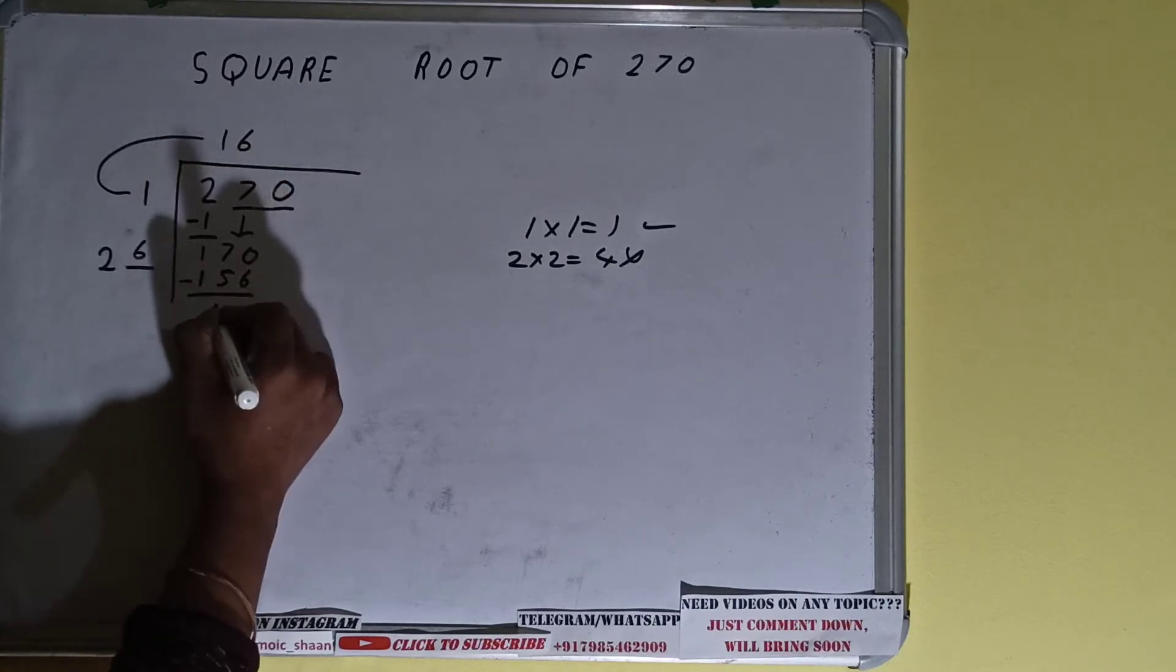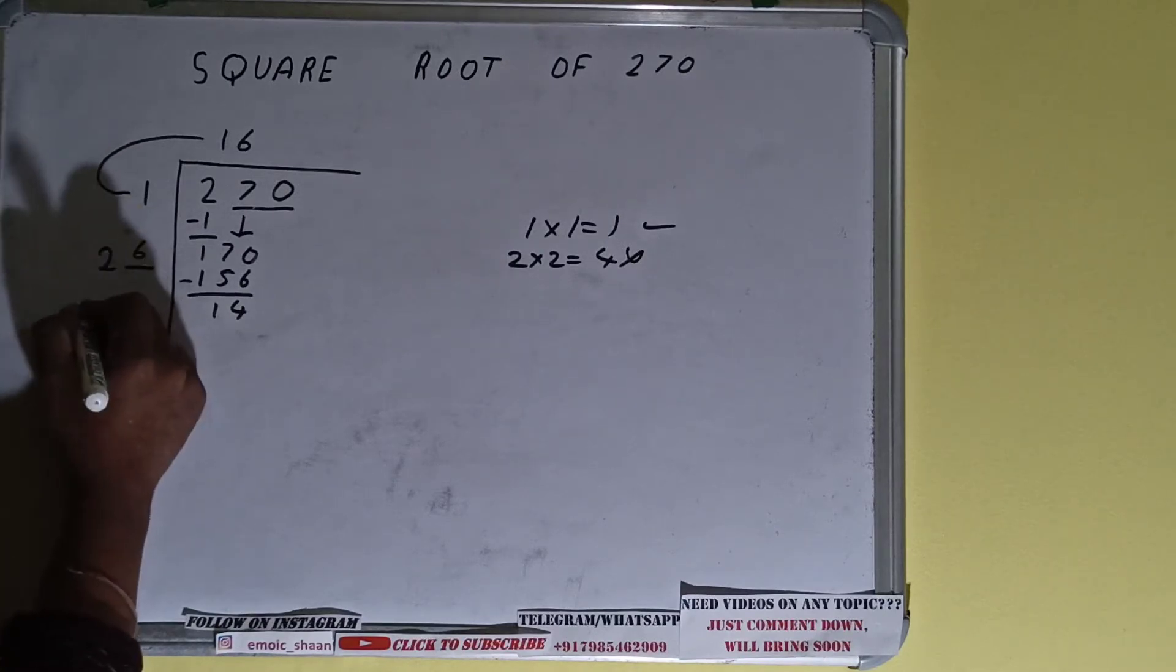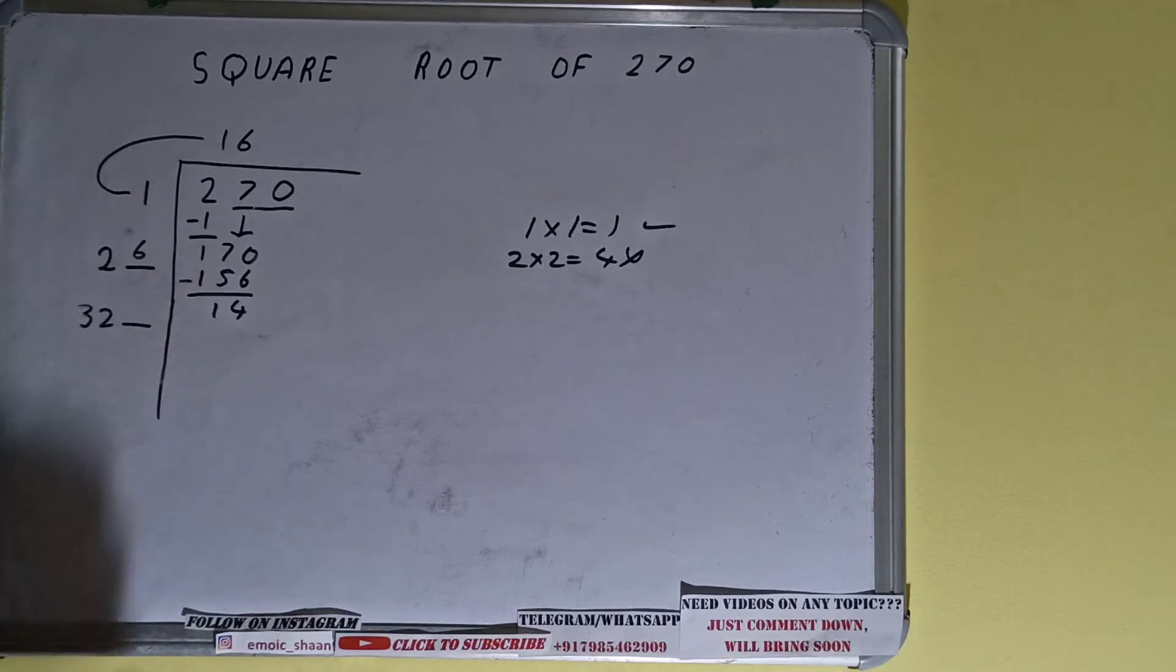Subtract it and we'll be having 14. Now 26 into 6 we did, right? So add both. So 26 plus 6 will be 32, and keep one digit extra.